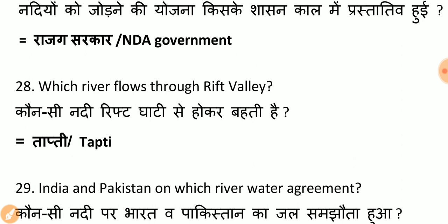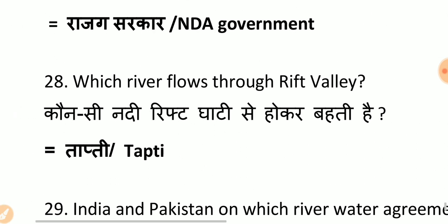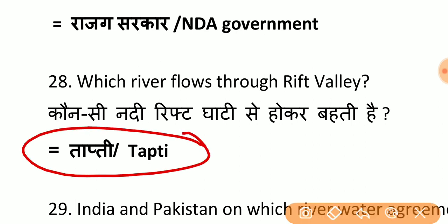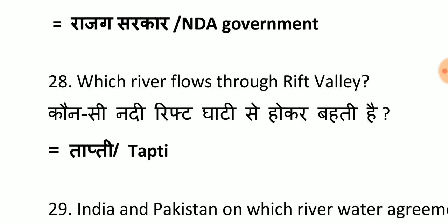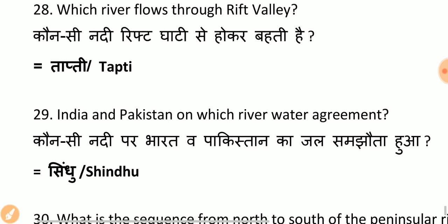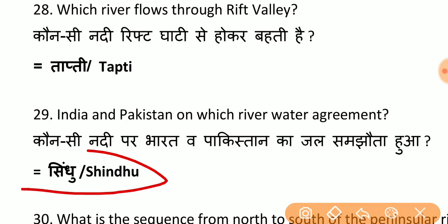Which river flows through a rift valley? This is a very important question, asked many times — the answer is Tapti. India and Pakistan have a water agreement on which river? Sindhu (Indus) river — India and Pakistan have a water agreement on the Indus river. Remember this question as it is relevant in current affairs too.